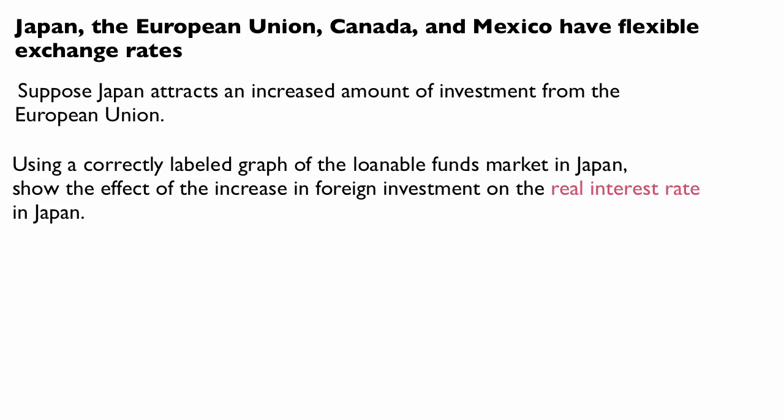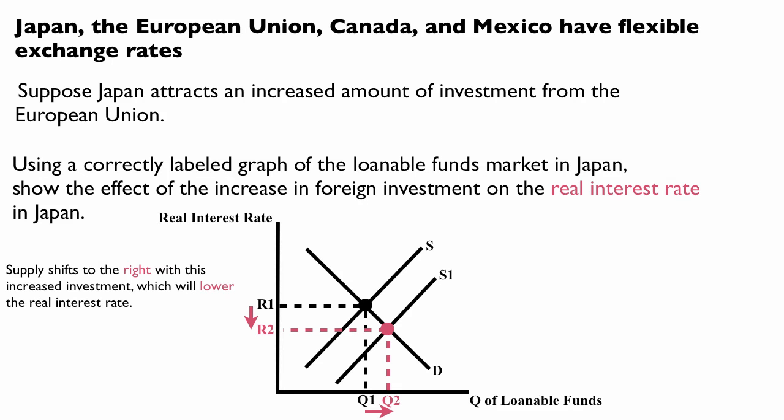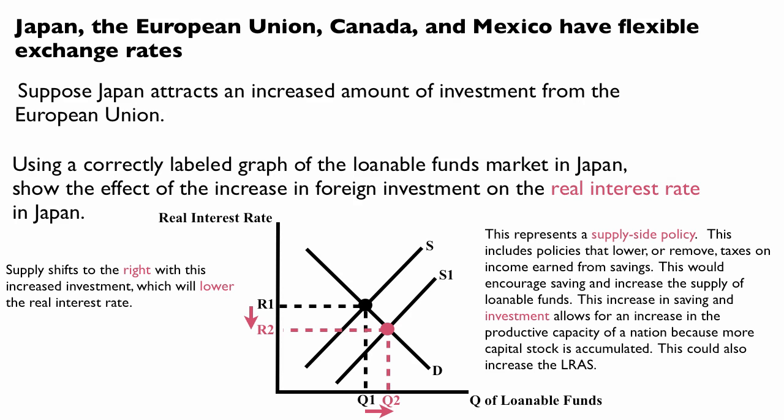Using a correctly labeled graph of the loanable funds market in Japan, show the effect of the increase in foreign investment on the real interest rate in Japan. The supply shifts to the right with this increased investment, which will lower the real interest rate. This represents a supply-side policy.